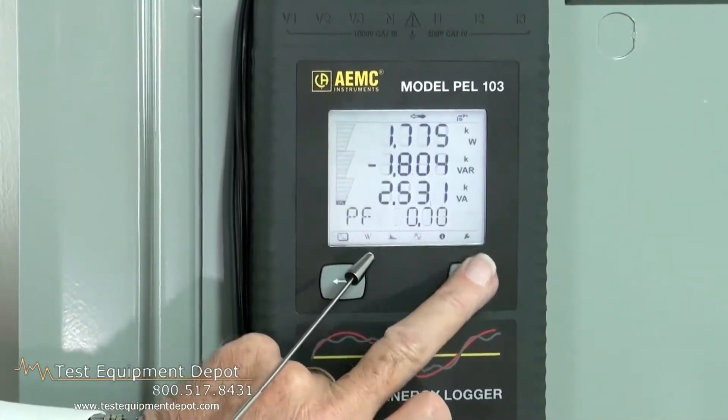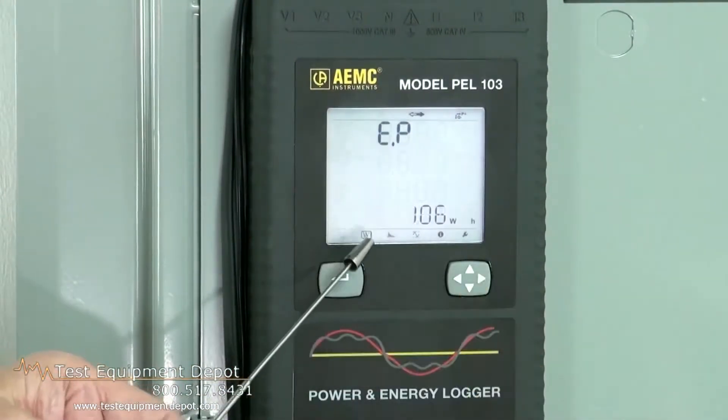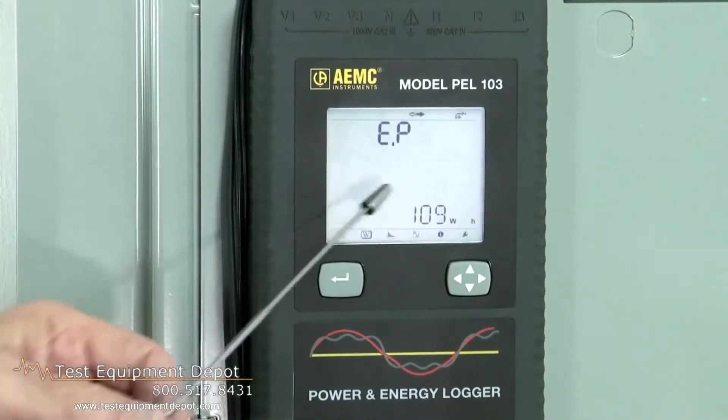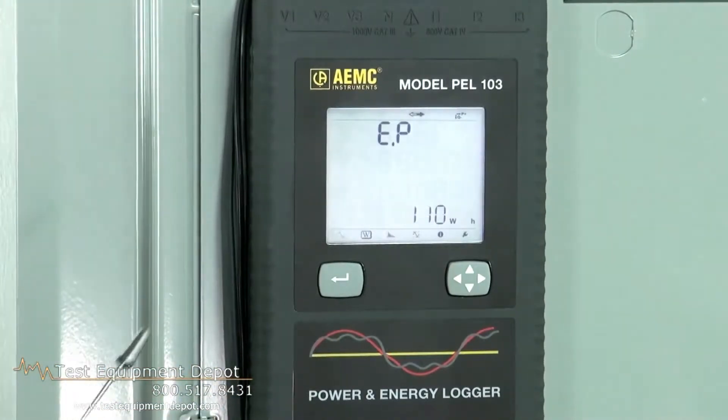Now we're moving over to watts. Now this tells us what our consumption is. You can see it winding up, 109, 110, and this will automatically go into the kilowatt range.